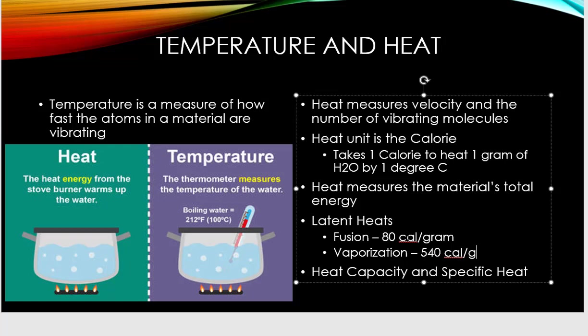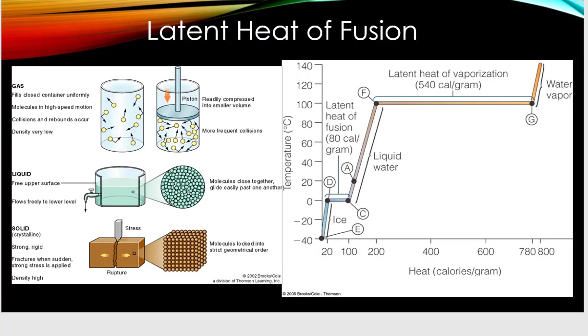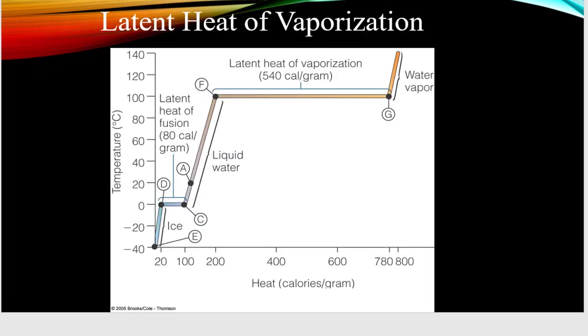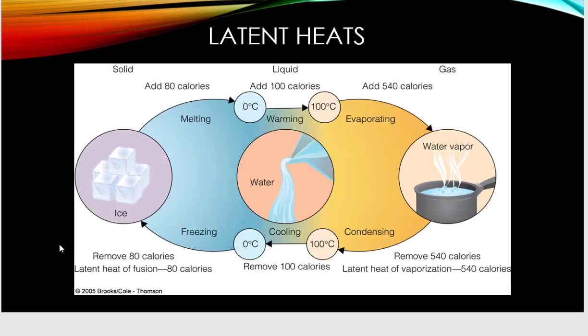Heat capacity and specific heat: the heat capacity of water is one calorie to heat one gram by one degree centigrade. Water has a very high heat capacity, and we'll do an experiment in lab to show that. I discussed the latent heat of fusion and latent heat of vaporization already in class, so I'll skip through this and move to that summary figure we talked about in class last week.